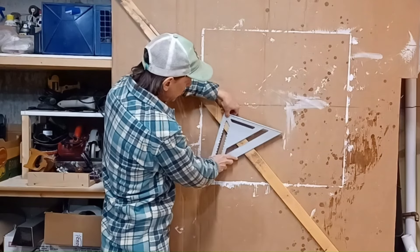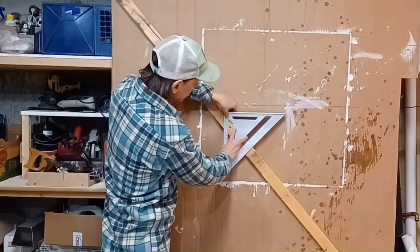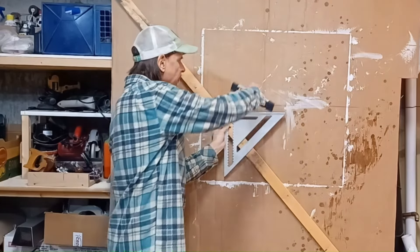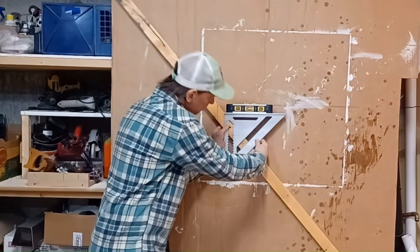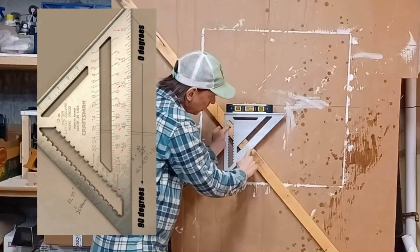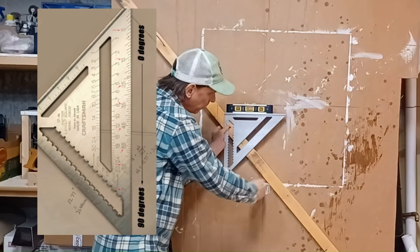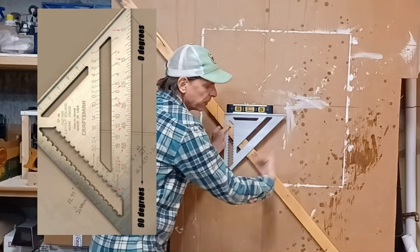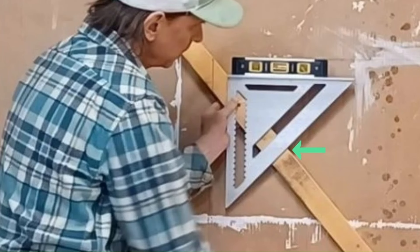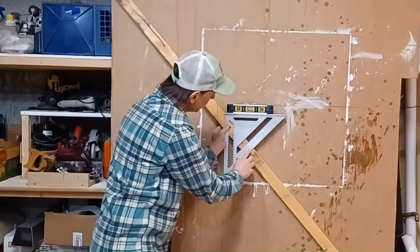Then rotate it until it's level. I've got a little level here, a torpedo level. Once it's level, look at these markings along here and read the angle that this board is coming up from the ground at. Be sure to read the angle here and not here. And it says 48 degrees.